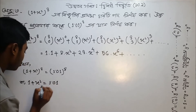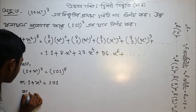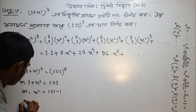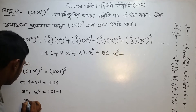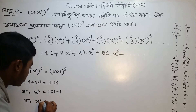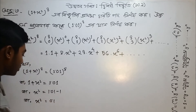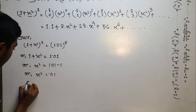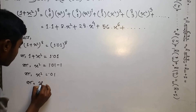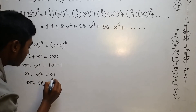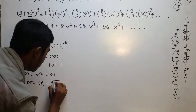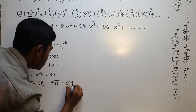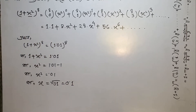So: 1.01 divided by x-squared equals 1; 1.01 minus 1 divided by x-squared equals 1; 0.01 divided by x-squared equals 1; root over 0.01 equals 0.1.